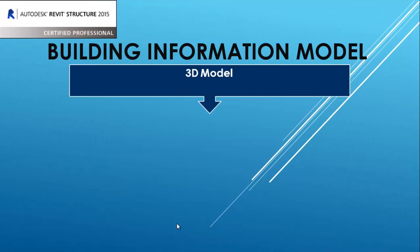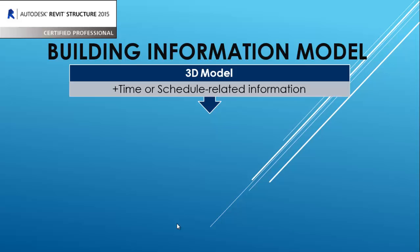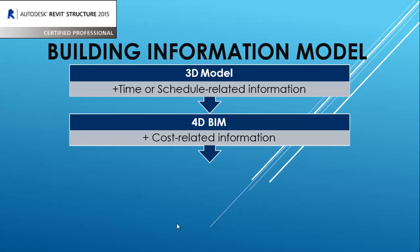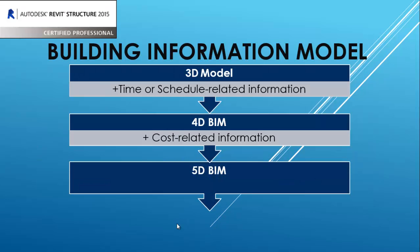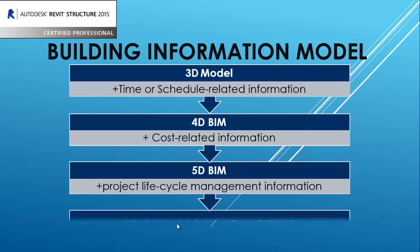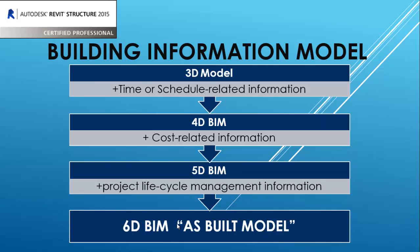Building Information Modeling, as we said, uses the concept of a Building Information Model. A 3D model, when we add time and schedule-related information, becomes a 4D Building Information Model. When cost-related information is added, it gives us 5D BIM. If we then add project lifecycle management information, we get 6D BIM — also known as the as-built model — and that is the main use of Revit.